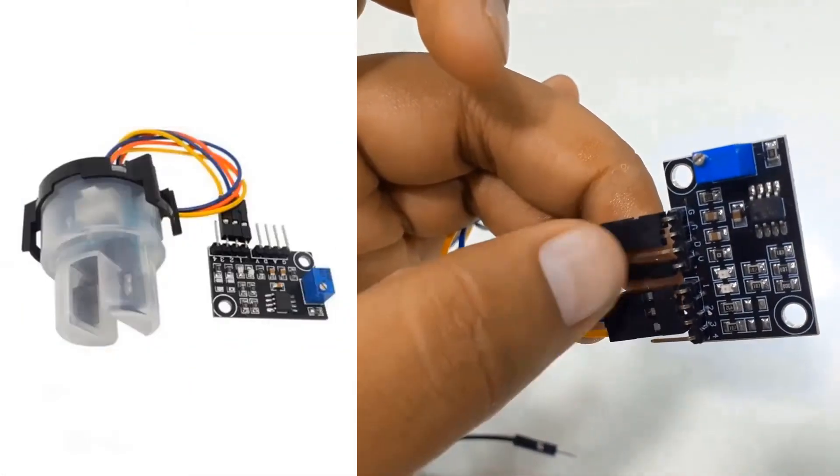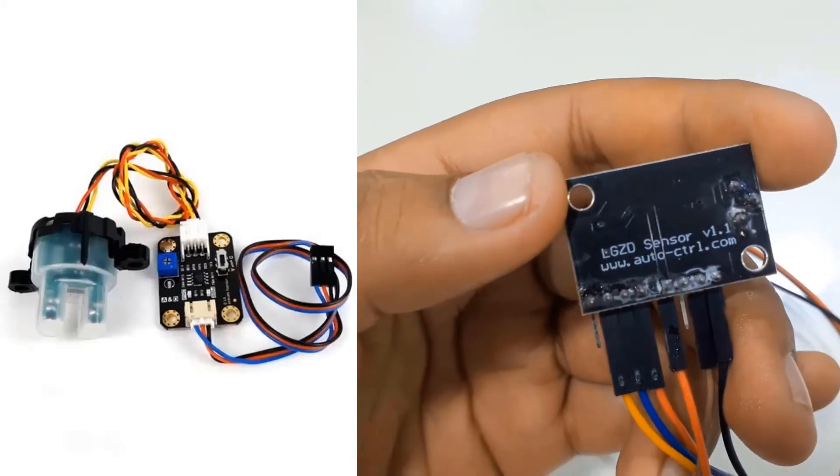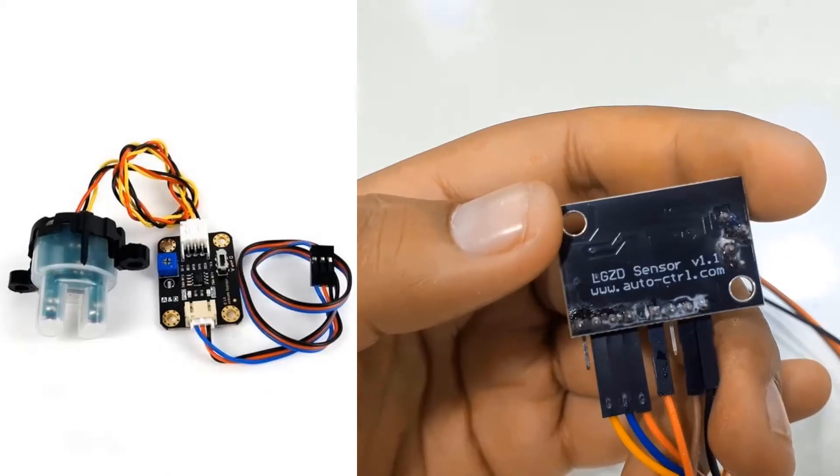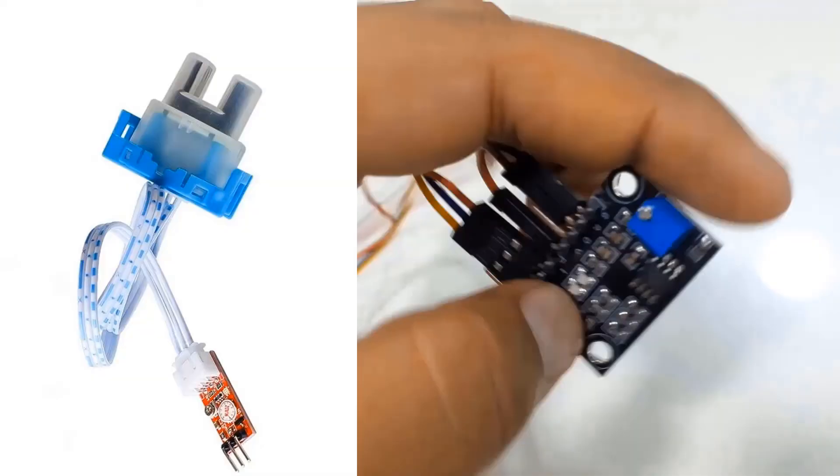The sensor is manufactured by different companies but all of them work with the same principle and operate using same Arduino code. The turbidity sensor manufactured by DFRobot is still the popular one. You can use any of the sensors.